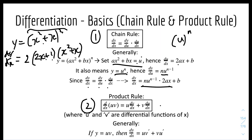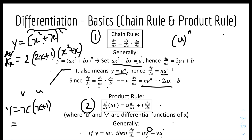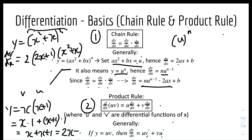For the product rule, where u and v are differentiable functions of x, dy over dx equals v times u prime plus u times v prime. For example, if y equals x times (x plus 1), we can set u equals x and v equals (x plus 1). Applying the rule: v times u prime is (x plus 1) times 1, plus u times v prime is x times 1. So dy over dx equals x plus 1 plus x equals 2x plus 1, which matches differentiating x squared plus x directly.